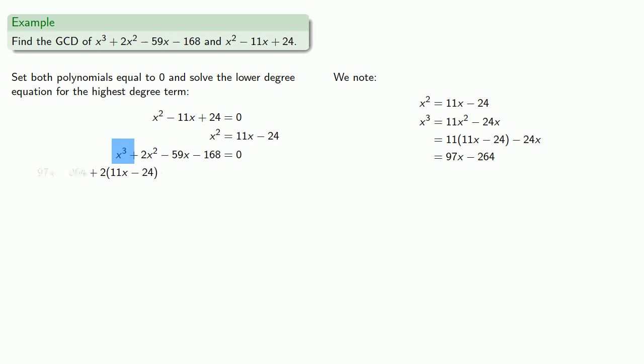And that means our x-cubed term can be replaced by a linear term. So we replace x-squared with 11x minus 24, and x-cubed with 97x minus 264. The other terms remain. And simplify. Now since we're looking for the GCD of two polynomials, we can actually factor out any common constant term. So let's do that.